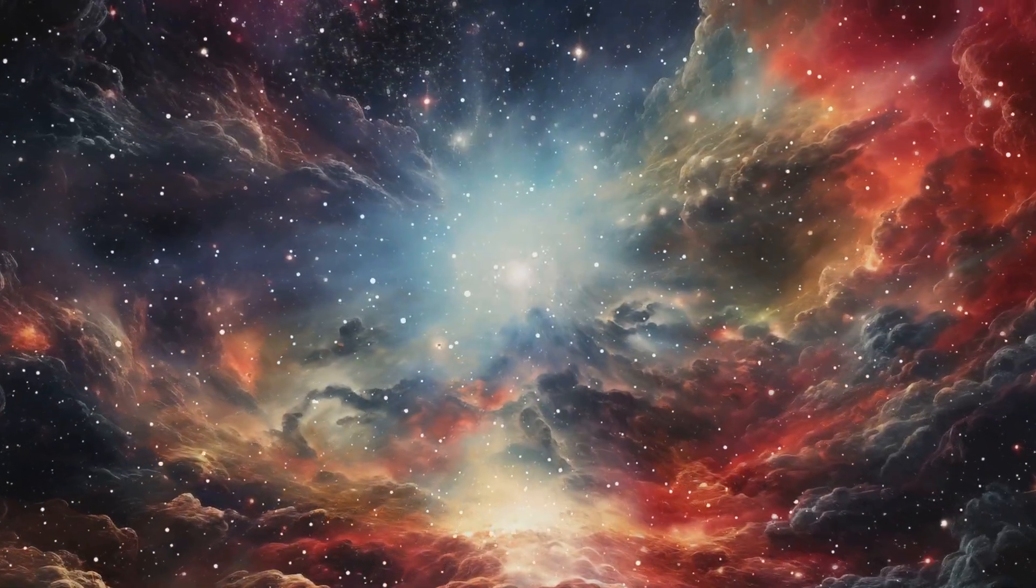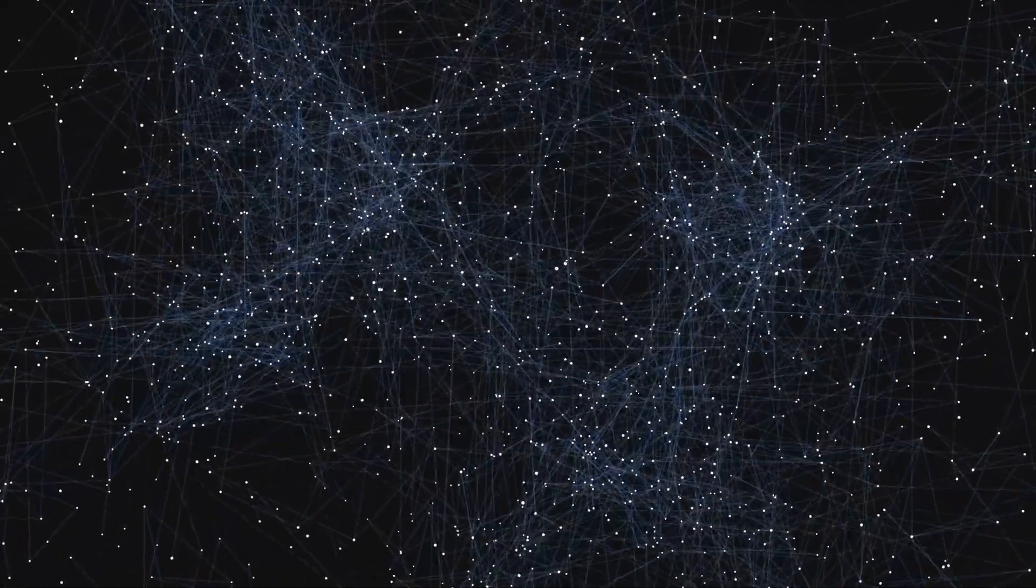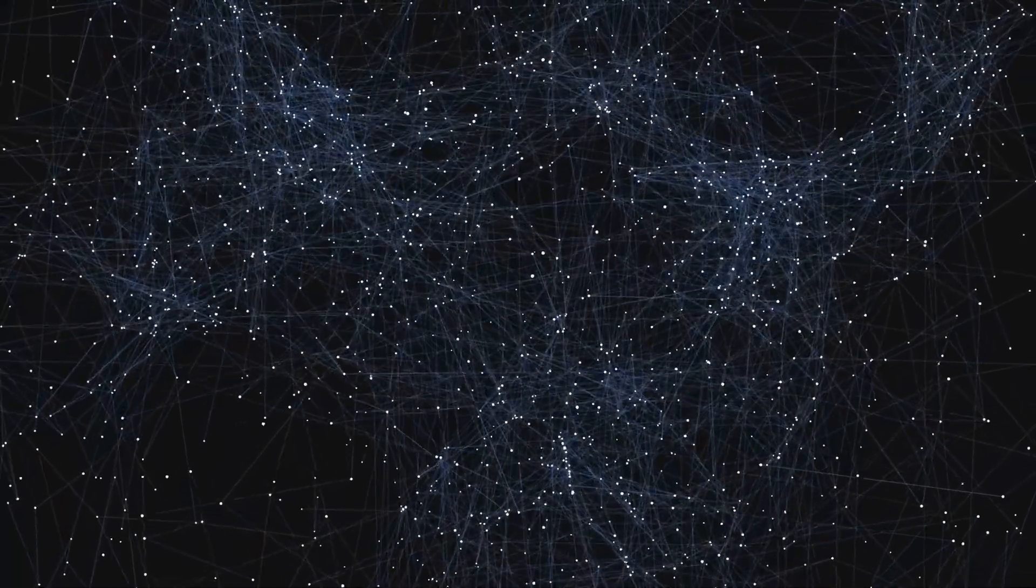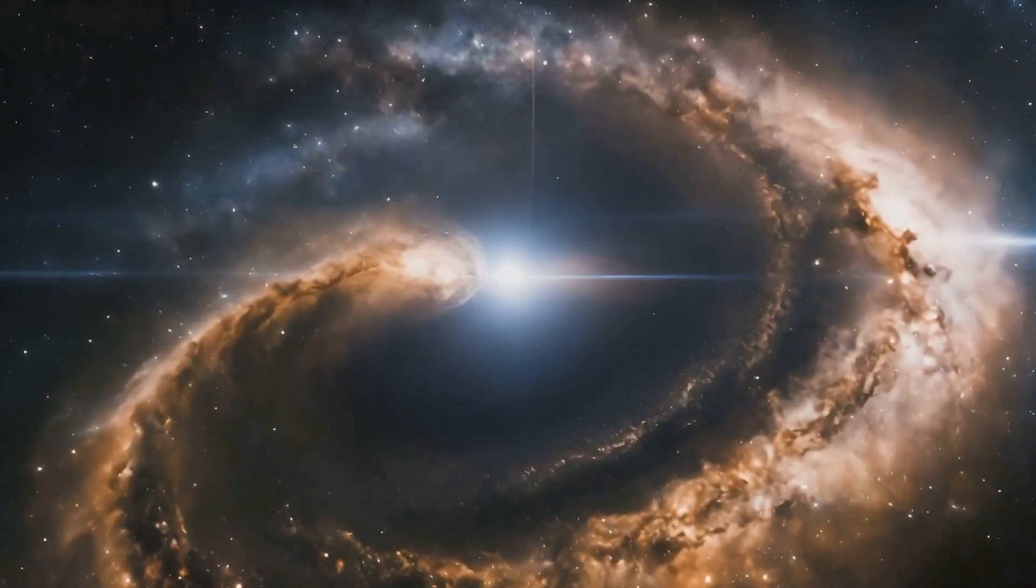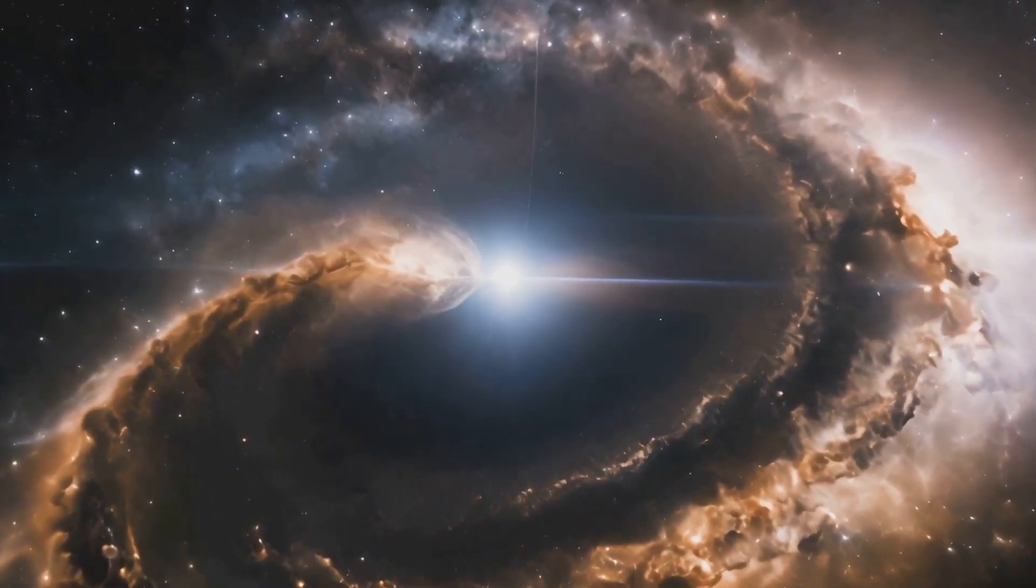The influence of dark matter extends far beyond individual galaxies. It is the invisible architect behind the cosmic web, the vast network of filaments and voids that defines the large-scale structure of the universe. These filaments acted as highways for ordinary matter, channeling the flow of gas and galaxies across the universe.